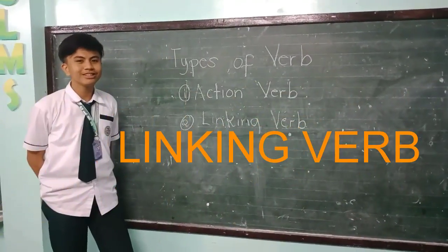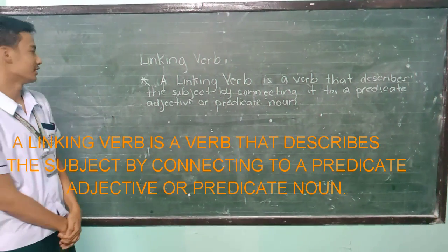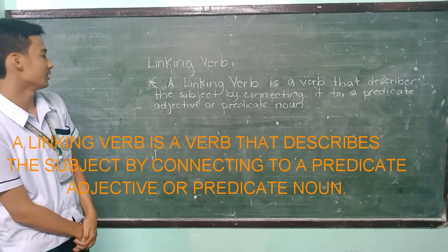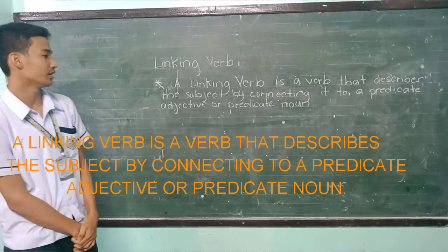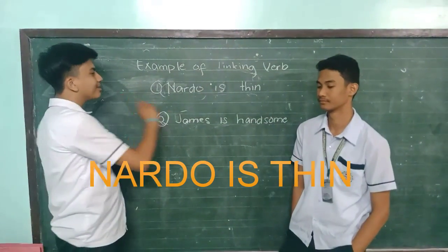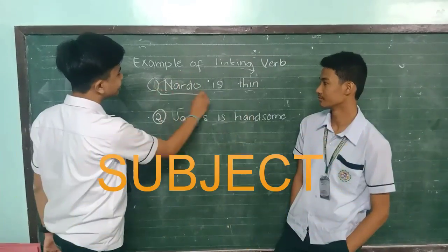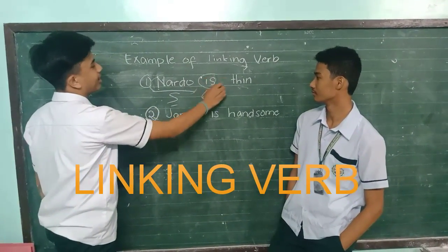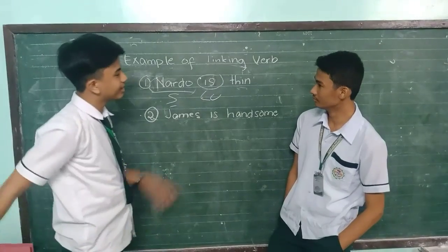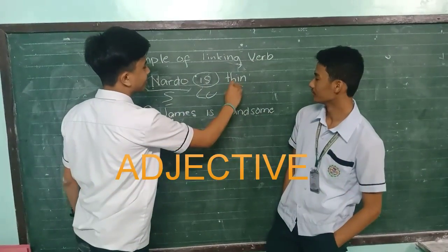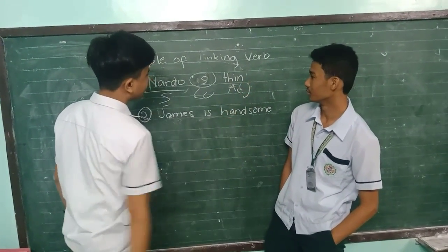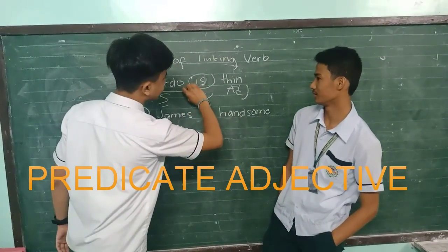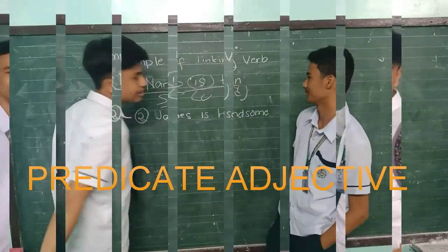The second type of verb is linking verb. A linking verb describes the subject by connecting it to a predicate adjective or predicate noun. Example: Nardo is the subject, is is the linking verb, and the adjective is the predicate adjective.